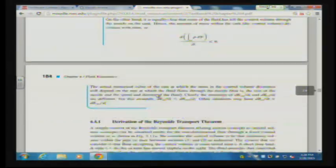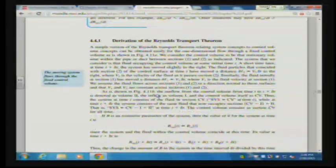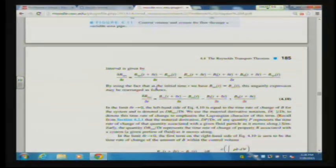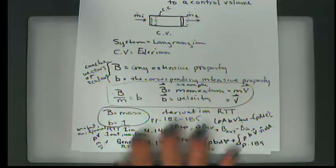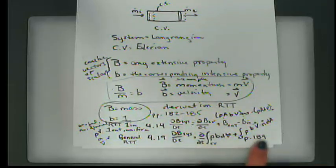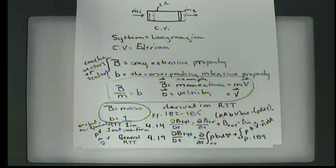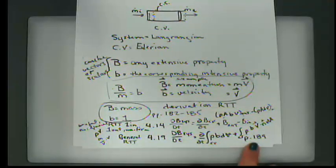The derivation is in your textbook on pages 182 through 185. I want to get down to two equations. Equation 4.14 is specific but very useful, and equation 4.19 is the more general form of the Reynolds Transport Theorem on page 189 of your textbook. Let's look at the more general form, equation 4.19, first.